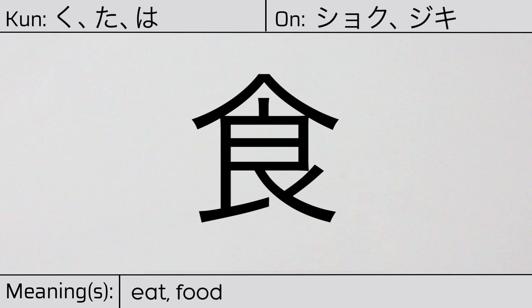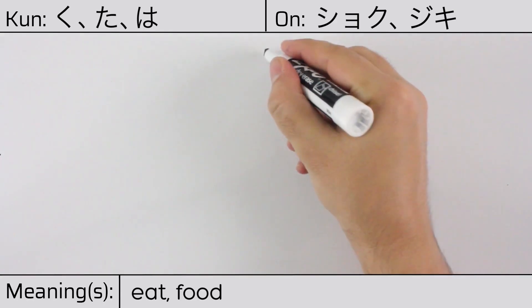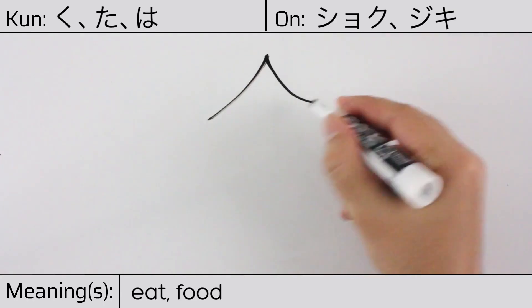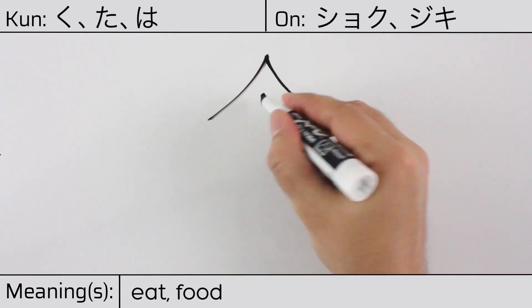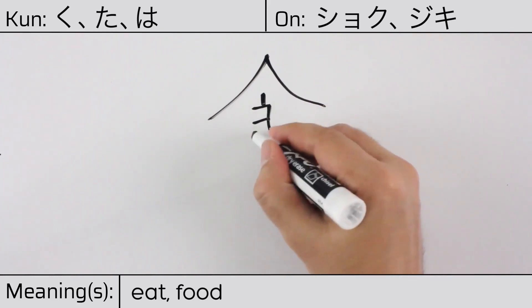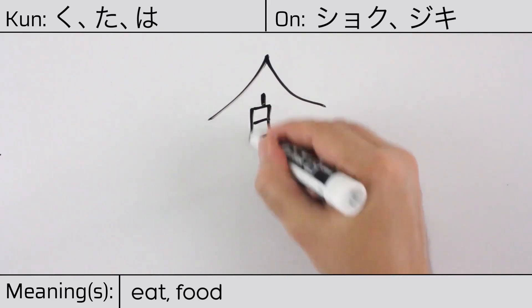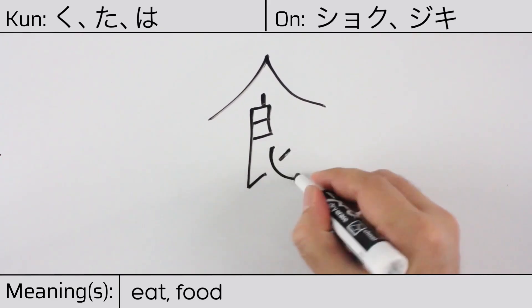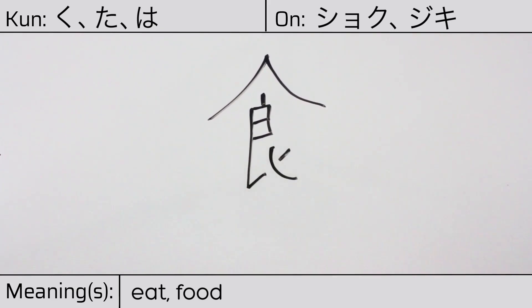Here is the stroke order: ichi, ni, san, shi, go, roku, shichi, hachi, kyu.